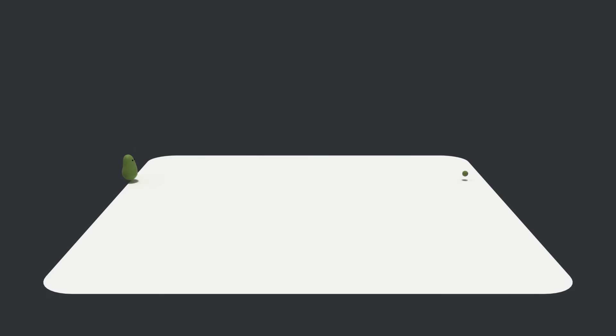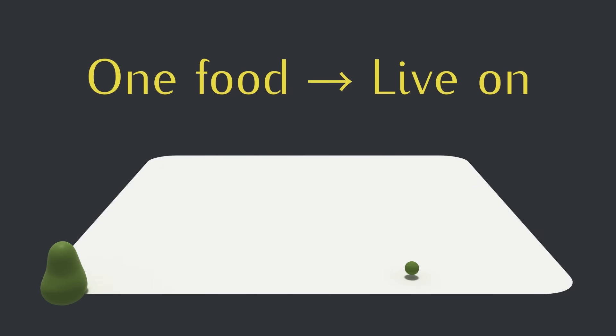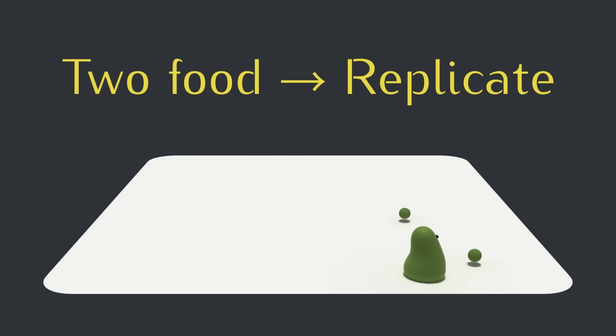Here are the rules. If a blob fails to find any food before running out of energy, it will die. If a blob gets one piece of food and manages to get back home to the edge, it will live on to the next day. And if a blob gets two pieces and gets home, it will survive to the next day and also replicate, adding another creature to the next day.